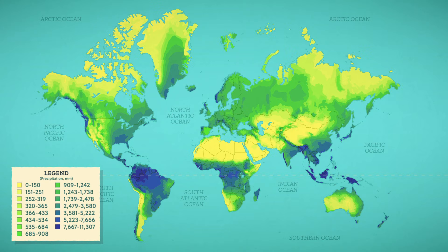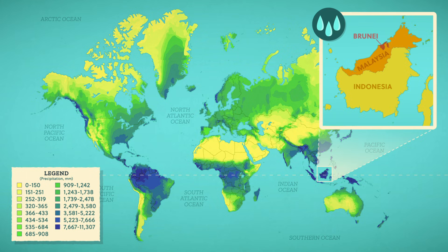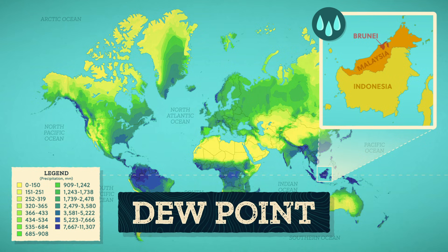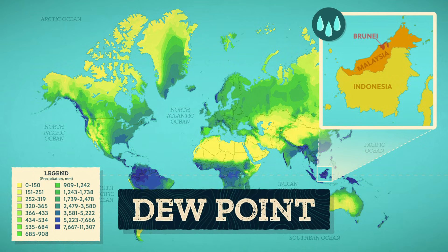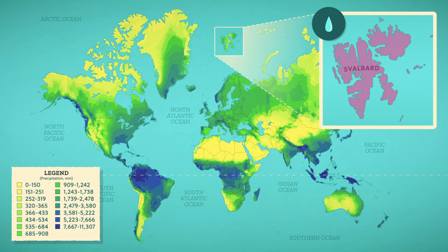Looking at our map, there are areas with a lot of precipitation, like the island we call Borneo. The air here near the equator is hotter and has a higher dew point — the temperature when the air is saturated with water vapor and condensation is imminent. But areas like what we call the Svalbard Islands in the Arctic Ocean get very little precipitation because the air at those latitudes is cold and dry.